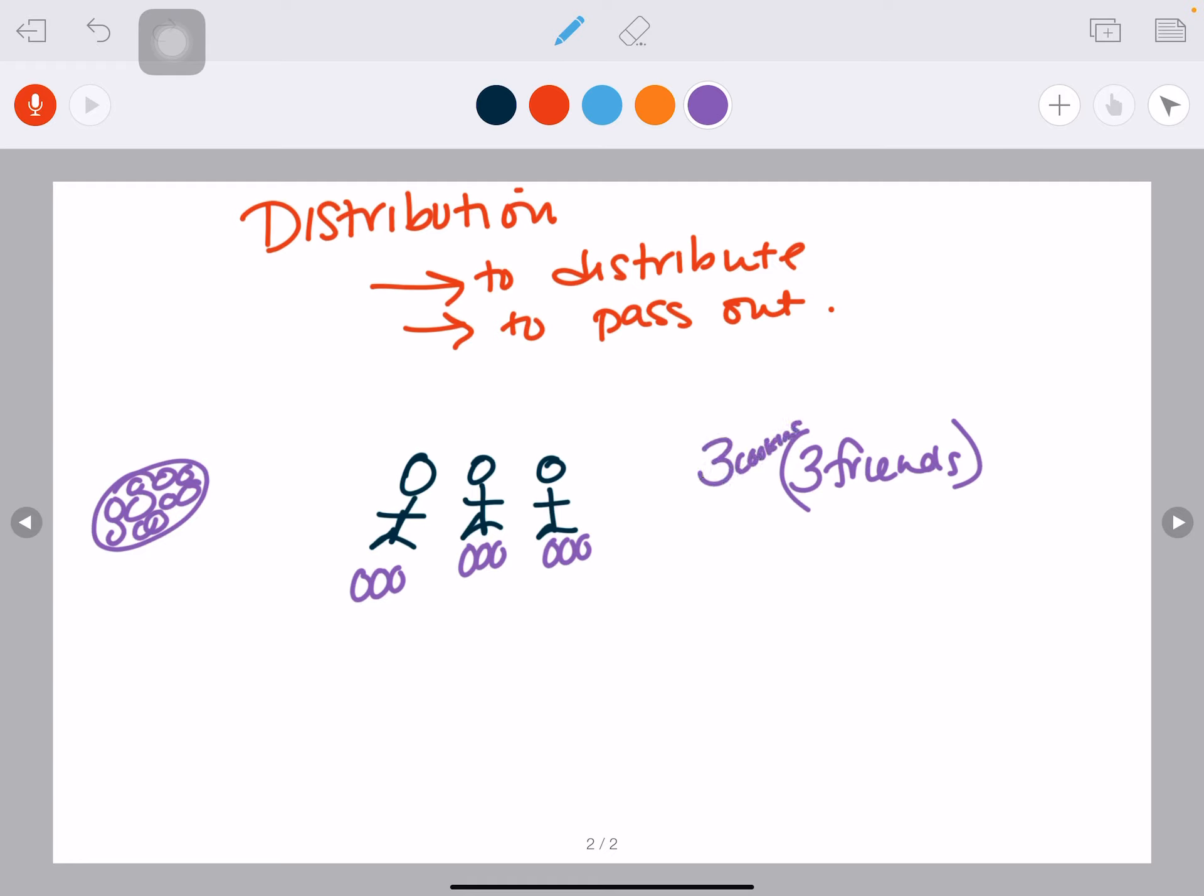So that's really three times three or three times to each person. Right? So three to him, three to him, three to him. And that means you handed out nine cookies in total.